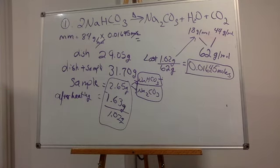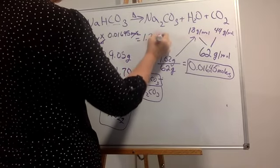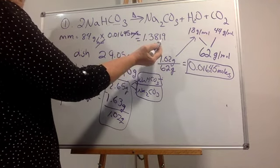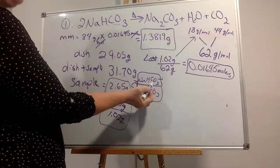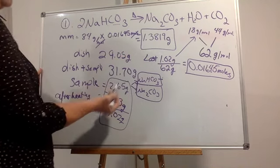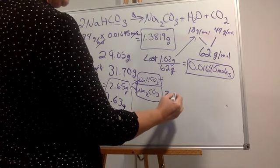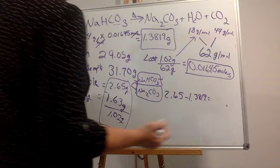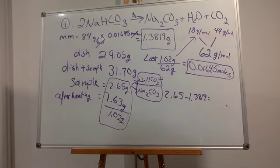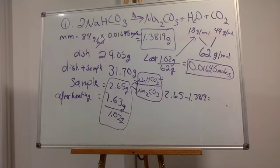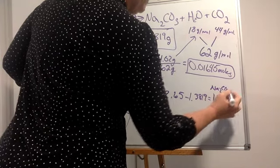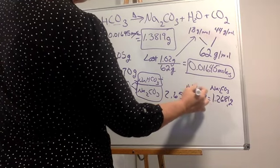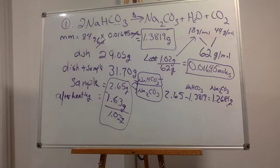So I take the 0.01645 and multiply it by 84 — the molar mass of sodium bicarbonate — and I get 1.3819 grams. I'm going to keep all the significant digits plus a couple more to make sure my final answer has the right significant figures. This is how much sodium carbonate I have. To find out how much sodium bicarbonate I have, I take 2.65 and subtract 1.3819, which gives me 1.2681 grams of sodium bicarbonate.